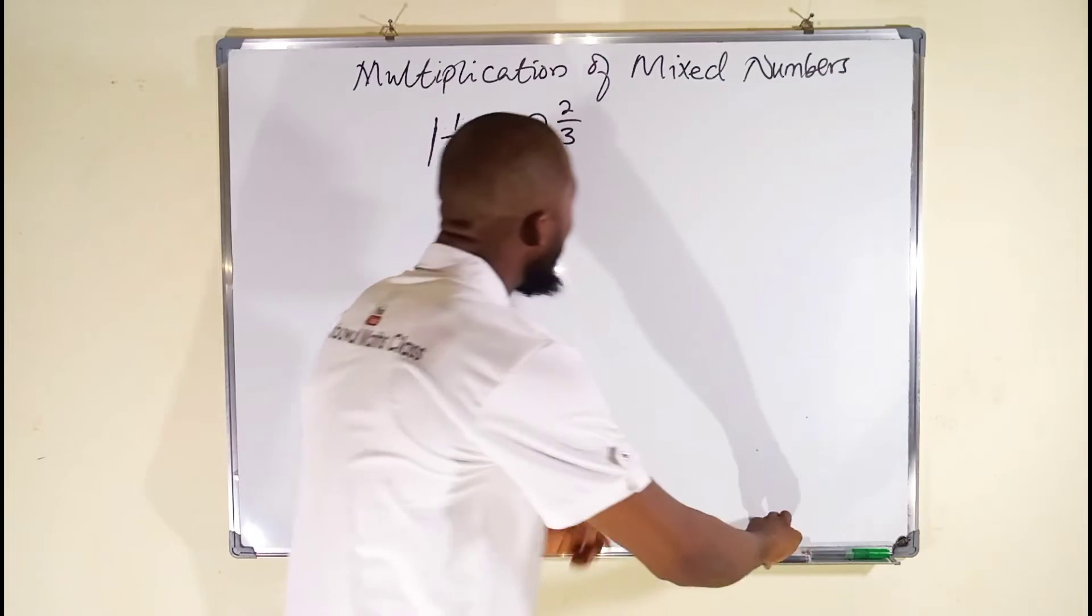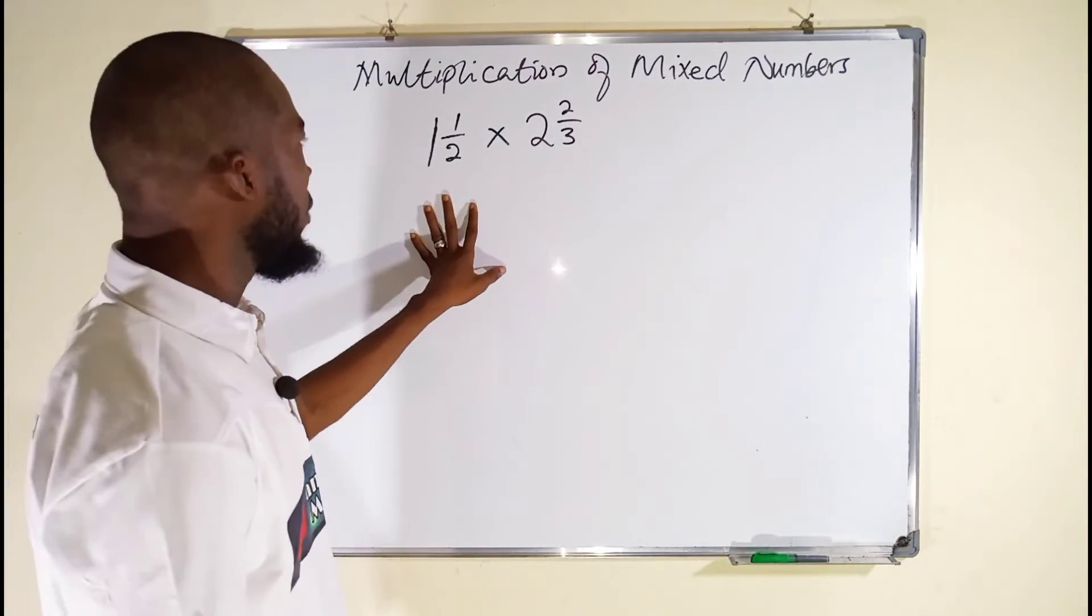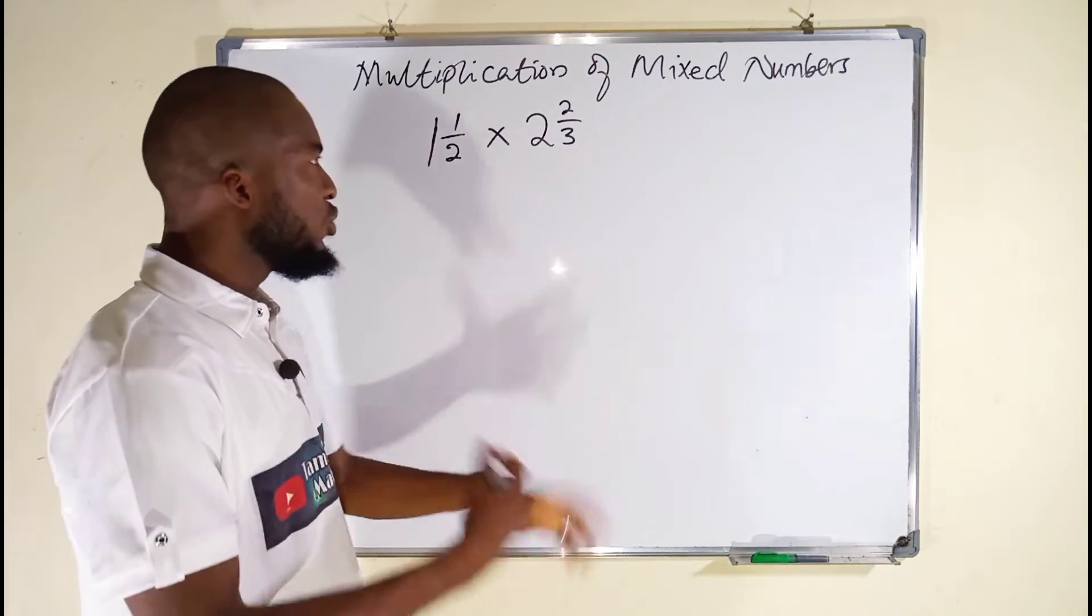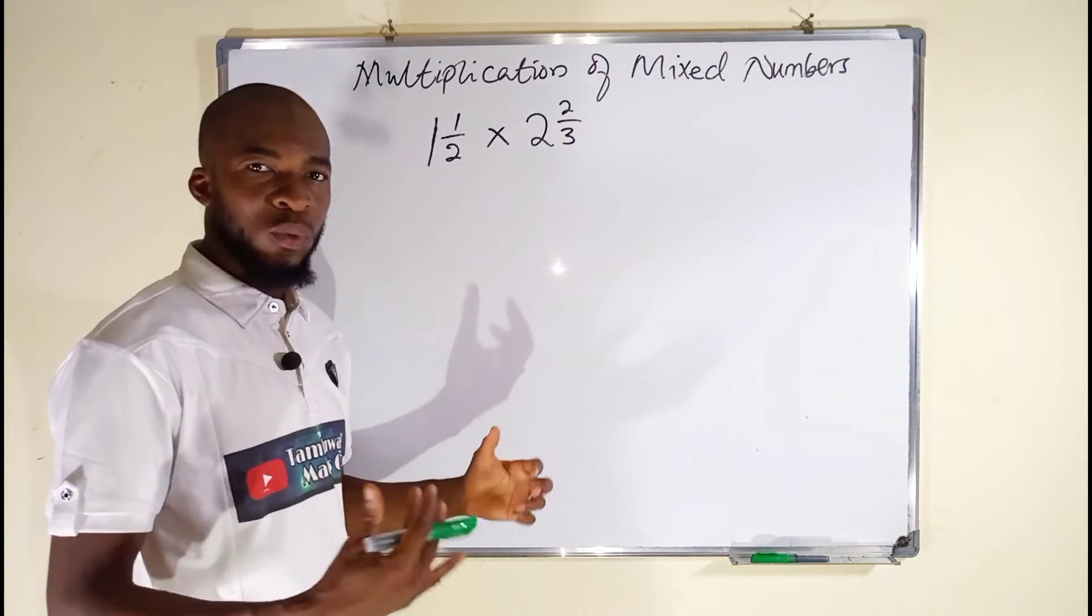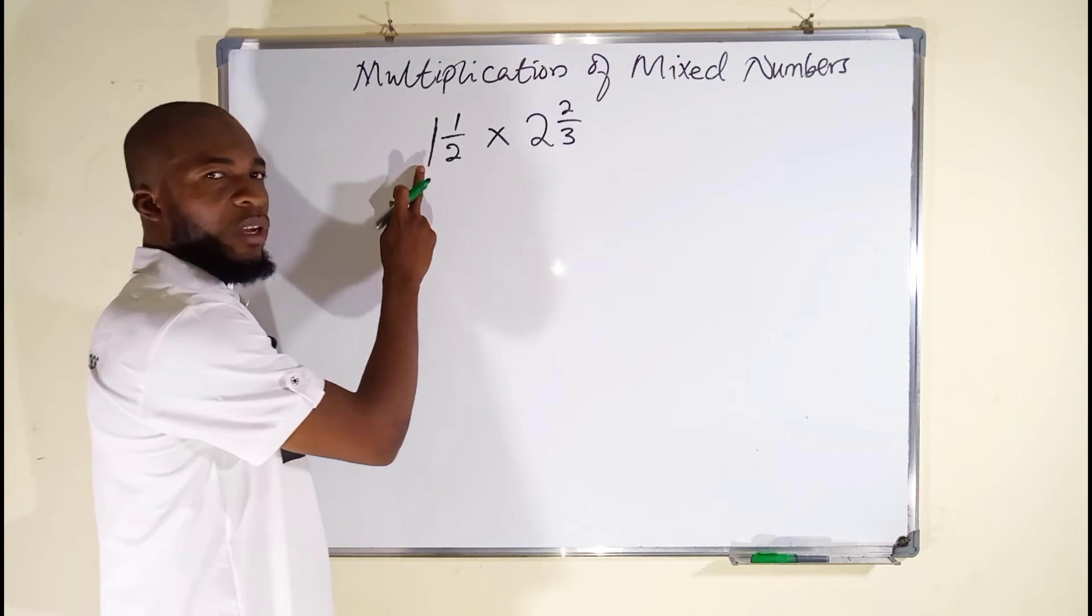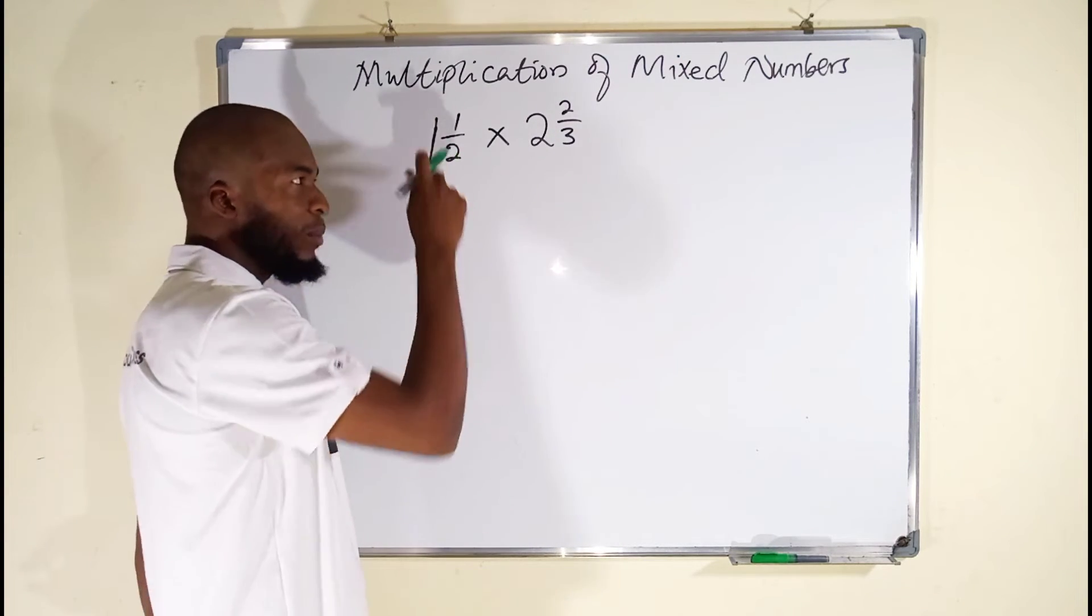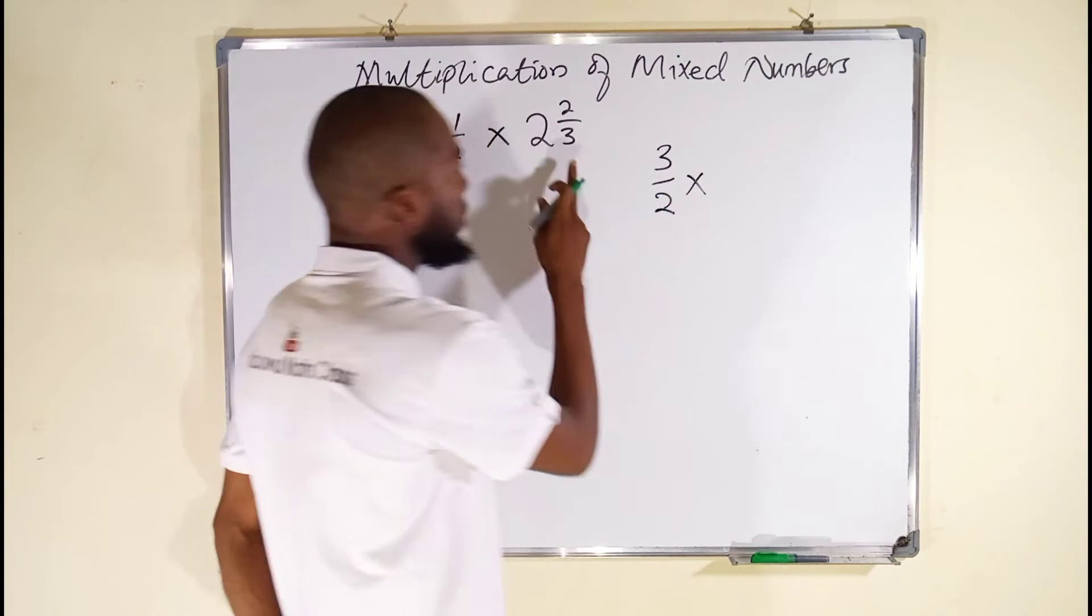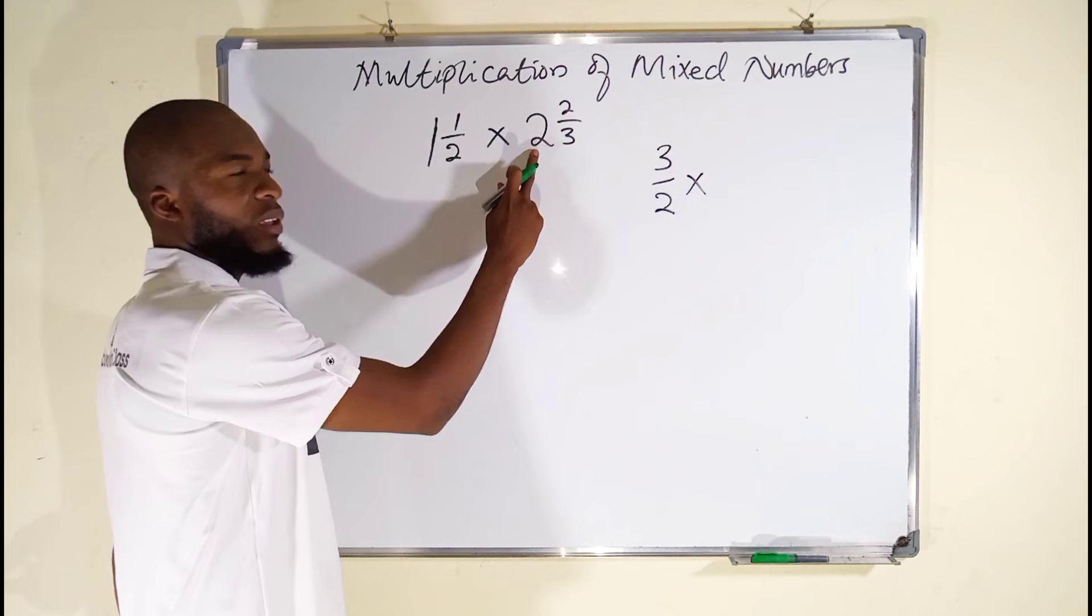So this is what we want to multiply: these mixed numbers together. You know, naturally we used to convert them into improper fractions. Okay, let us do that first. 2 multiplied by 1 is 2 plus 1 is 3 divided by 2, so we have 3 over 2 multiplied by 3 times 2 is 6 plus 2 is 8, so we have 8 here over 3.